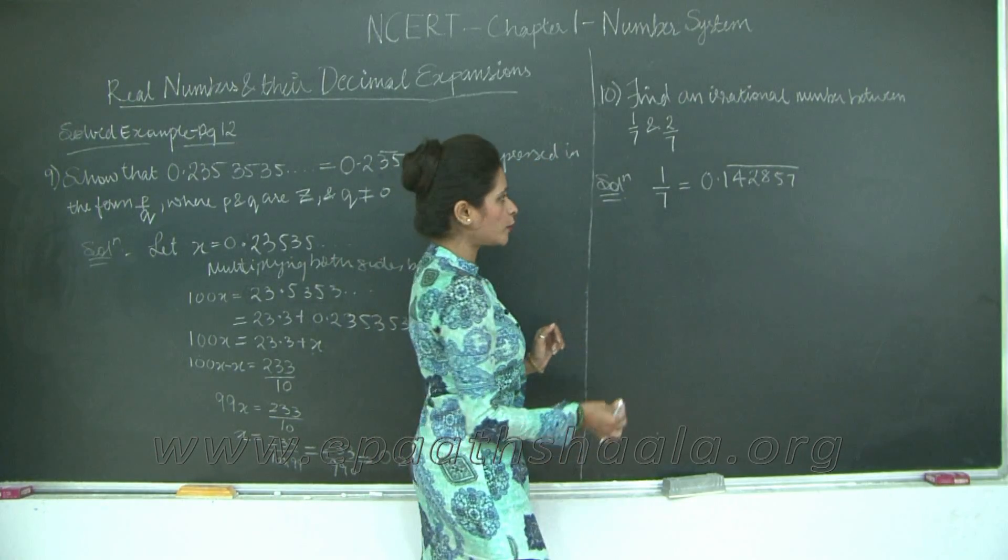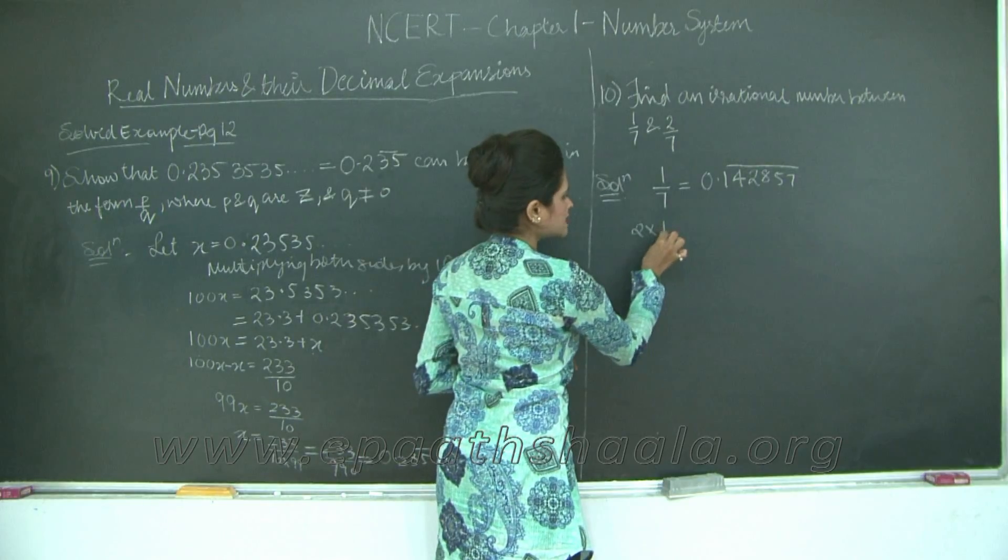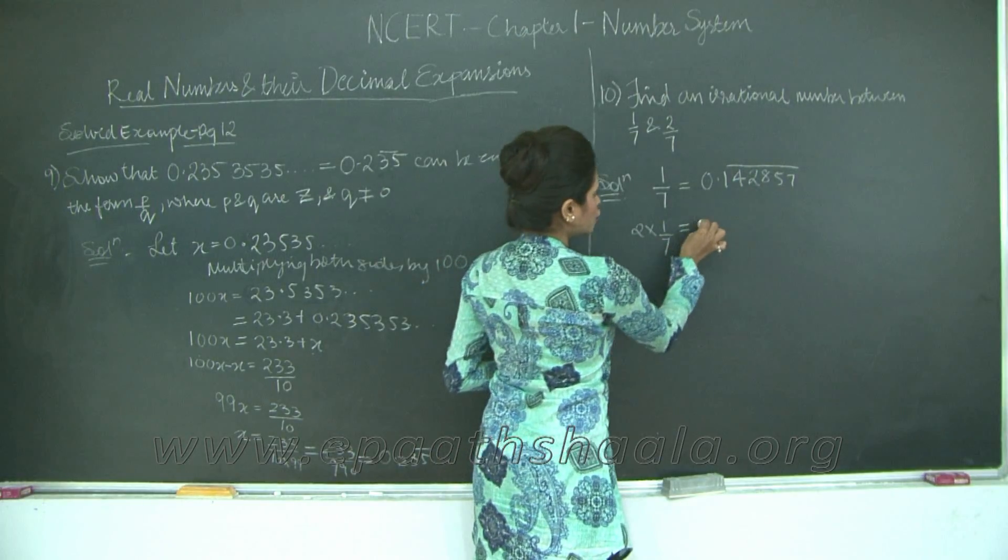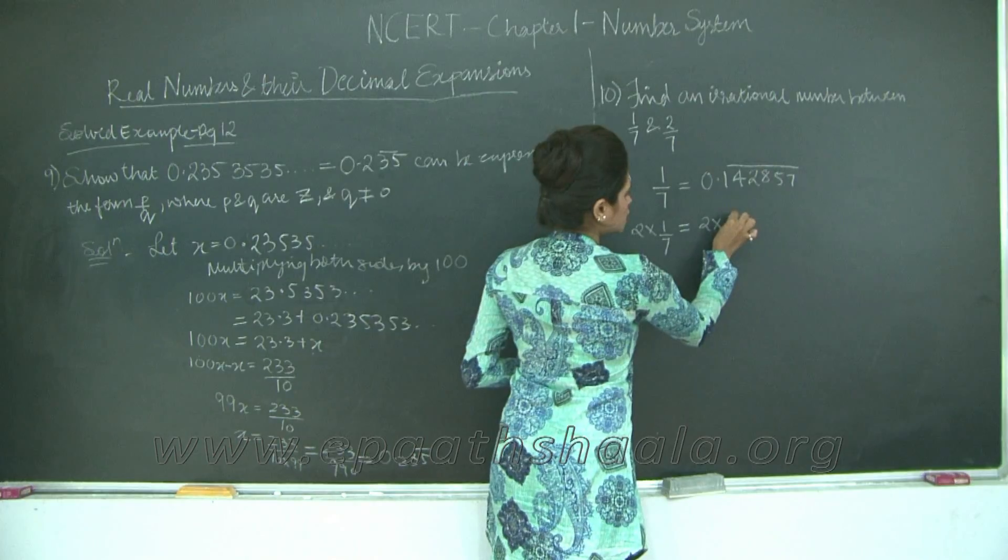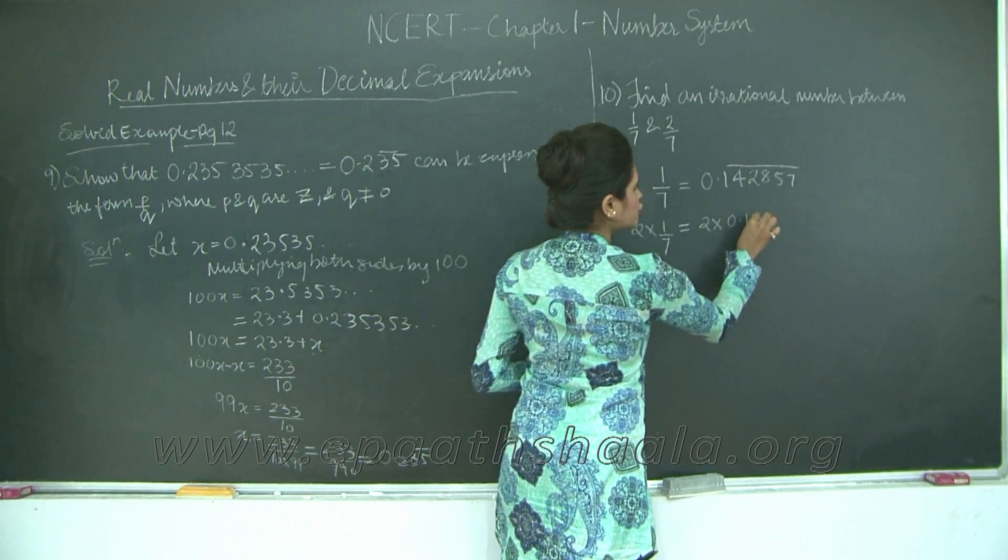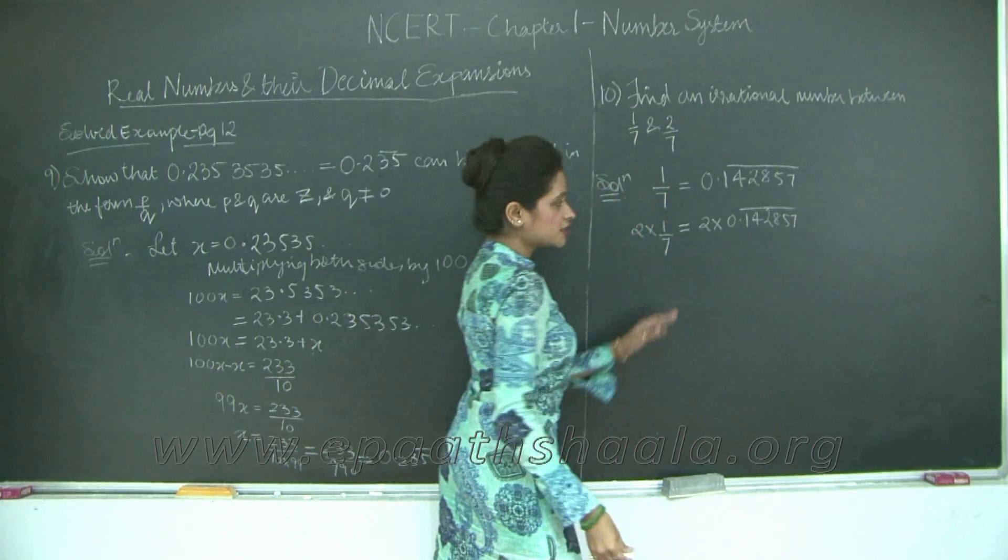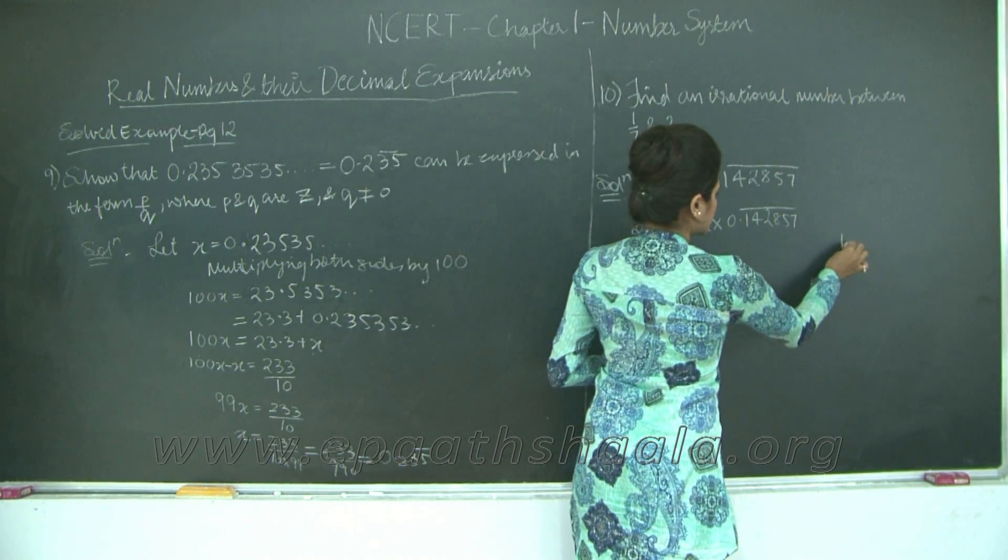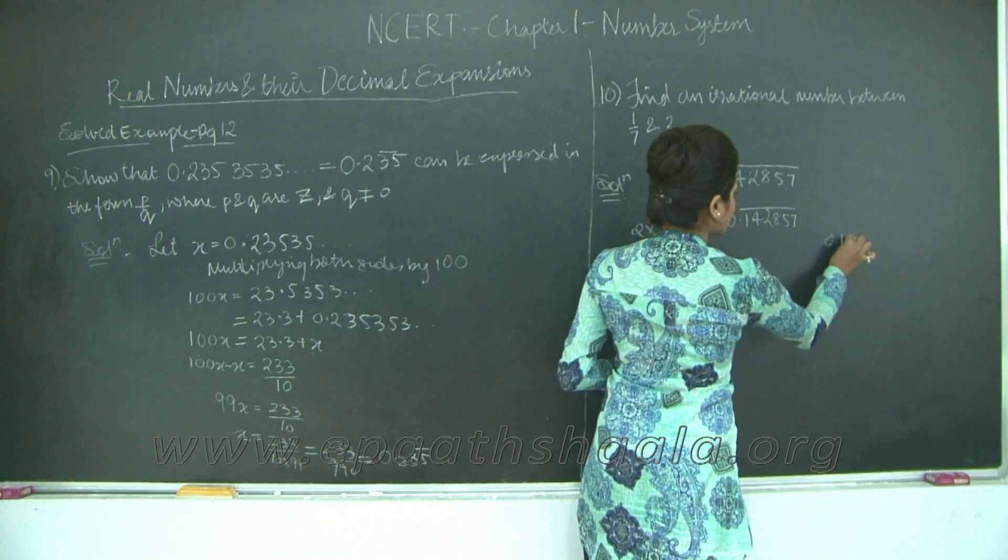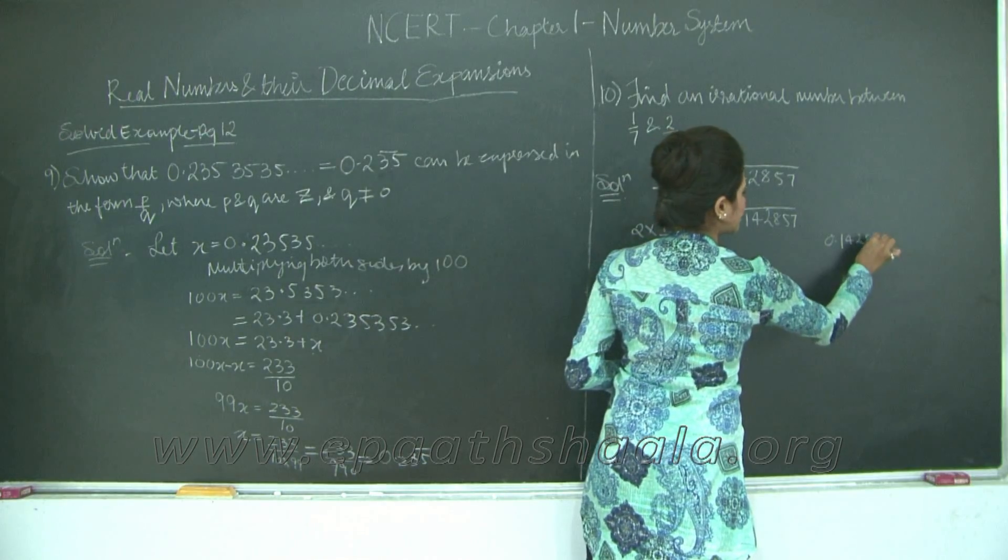Similarly, we can find the value of 2 upon 7, which is nothing but 2 times 1 upon 7, which is 2 times 0.142857 bar. So let us calculate this.